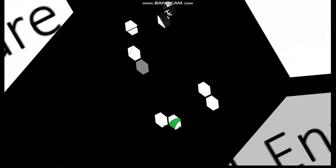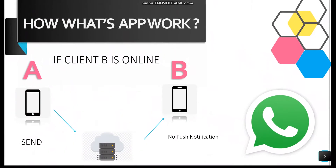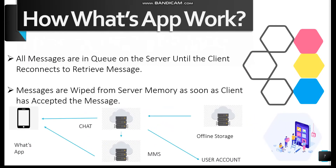Our next question is: How does WhatsApp work? The mechanism behind WhatsApp when a user is online: there are two clients, A and B, with a chat server between them. Client A sends a message, it goes to the chat server, and arrives at Client B when Client B is online. When a user is offline, all messages are queued on the server until the client reconnects to retrieve them. Messages are wiped from server memory as soon as the client has accepted the message.